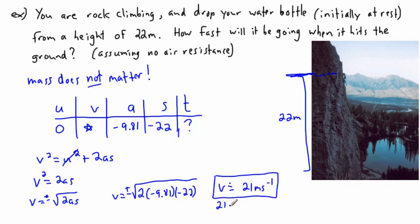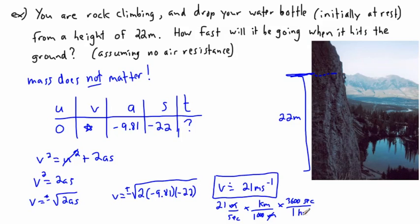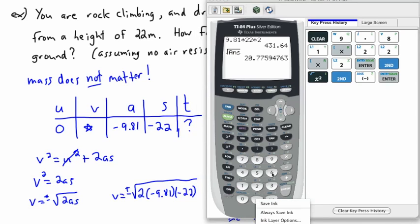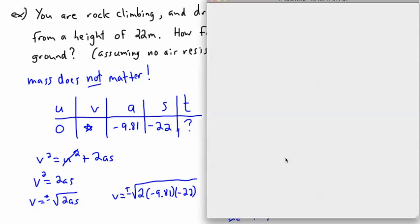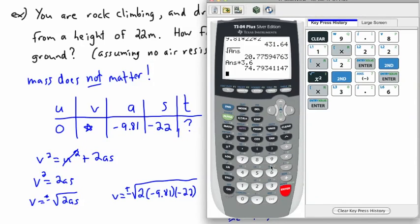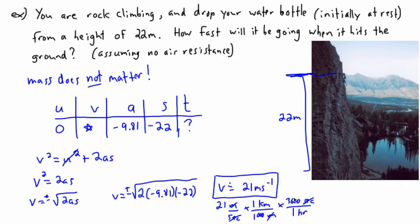We can convert 21 meters per second to kilometers per hour. Multiply by (1 km / 1000 m) to cancel meters, and multiply by (3600 s / 1 hour) to cancel seconds. That gives 21 × 3600 / 1000 = 21 × 3.6, which equals approximately 75 kilometers per hour.